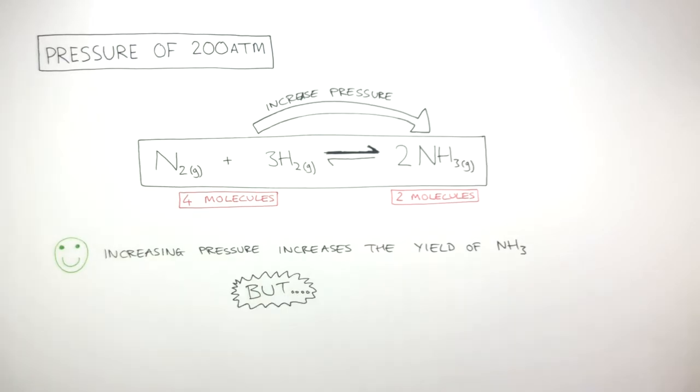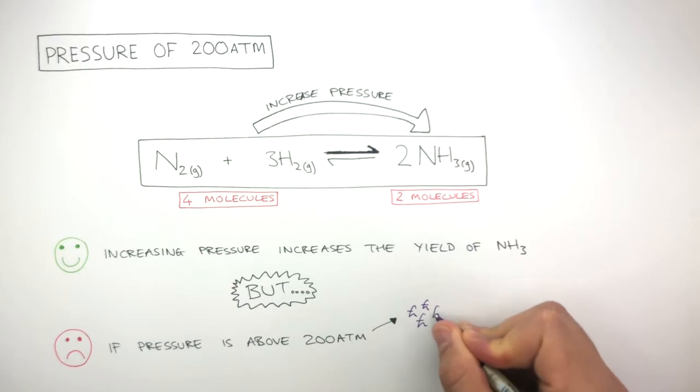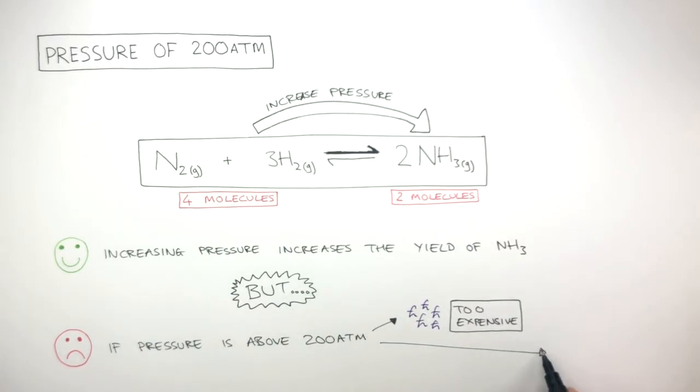However, a major negative is that if the pressure is above 200 atmospheres, the higher pressures would involve higher costs making the process more expensive. Not only this, there would be an increased risk of explosion in the chemical plant, so a compromise of 200 atmospheres is used.